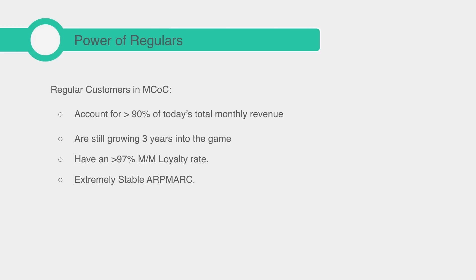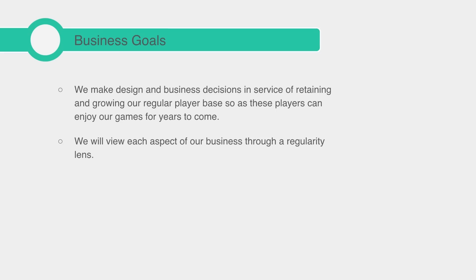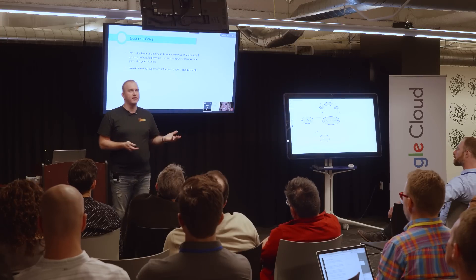Growing your regular base is about incrementally improving all those little percentages throughout the entire funnel. At Marvel, over 90% of monthly revenue now comes through regulars, and we're still growing them three years into the game. Regular users have over a 97% loyalty rate month over month — we've actually had months with over 100% loyalty in older cohorts. They also have a very stable ARPMRC (average revenue per monthly active regular customer), making them the perfect forecasting tool.